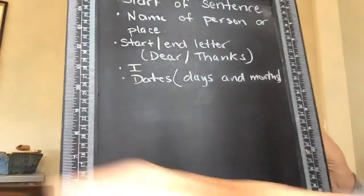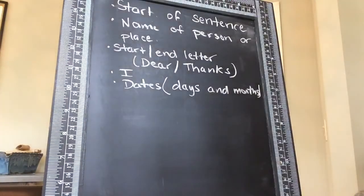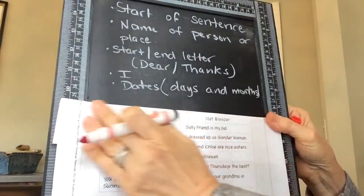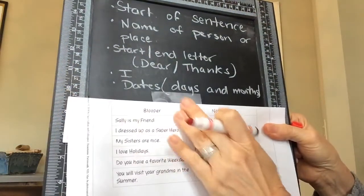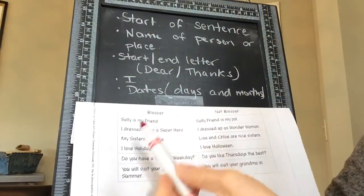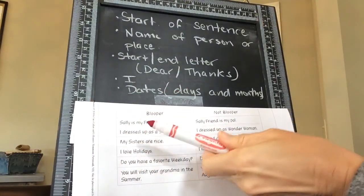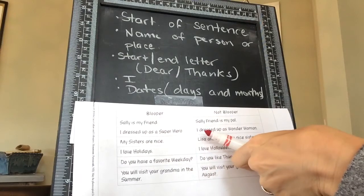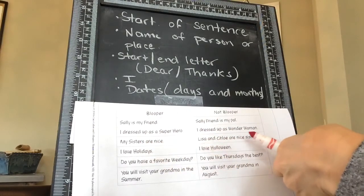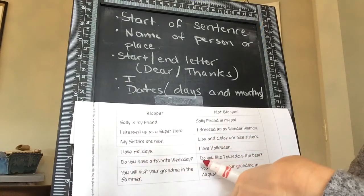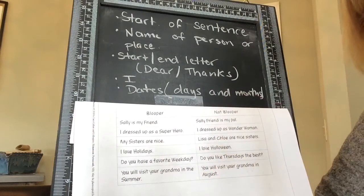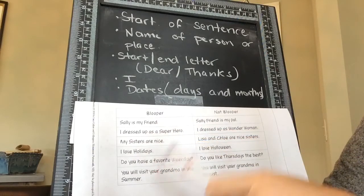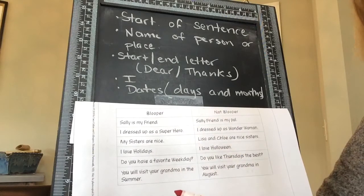Now I want you to take this paper — it has a few more on it — and push pause on the YouTube. Figure out all of these yourself. You've got bloopers and non-bloopers. Sally is my friend. Sally is my pal. I dressed up like a superhero. I dressed up like Wonder Woman. My sisters are nice. Lisa and Chloe are nice sisters. I love holidays. I love Halloween. Do you have a favorite weekday? Do you like Thursdays the best? You will visit your grandma in the summer. You will visit your grandma in August. Stop the tape, mark up the ones that are incorrect and try to think about why, then come back and we'll look at it together.